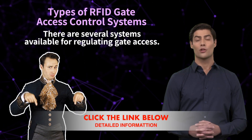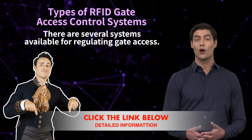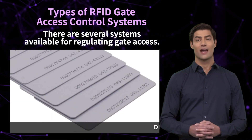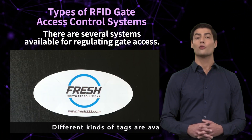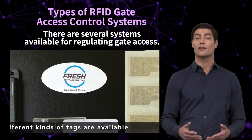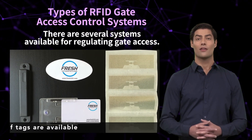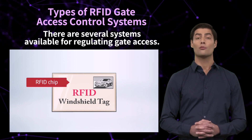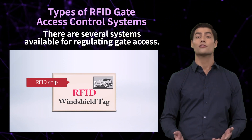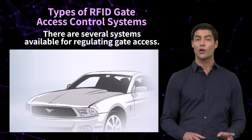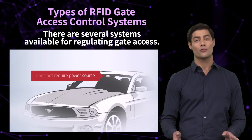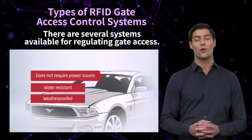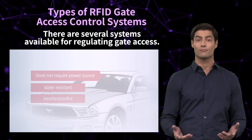The system typically consists of the following components. RFID tags and cards: these are small electronic devices that contain a unique identifier and can be attached to or embedded within objects or carried by individuals. They transmit data wirelessly using radio waves when they come into proximity with an RFID reader.